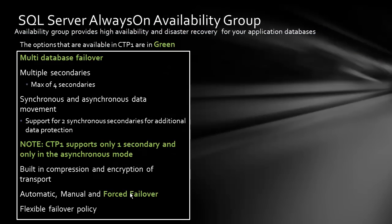Let's talk about the availability group key features available in CTP1, shown in green — not all features are yet available to validate. It allows multi-database failover and multiple secondaries, with a maximum of four. Each secondary can be configured as asynchronous or synchronous, with support for two synchronous secondaries for additional data protection. There is also built-in compression and encryption of transport, plus automatic, manual, and forced failover. Since it is based on cluster technology, it does not need a separate witness.